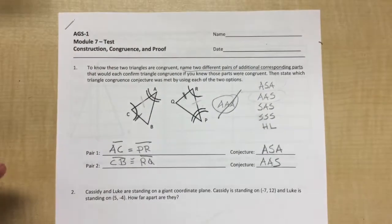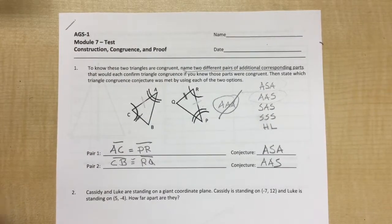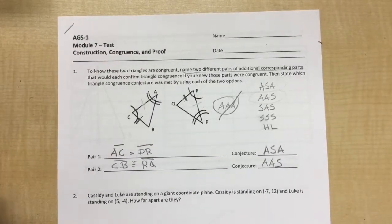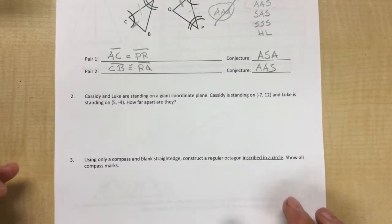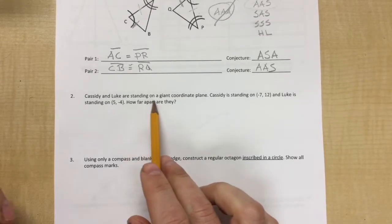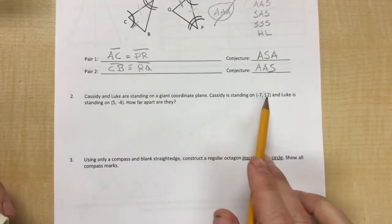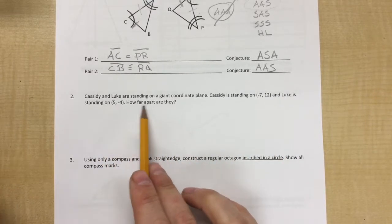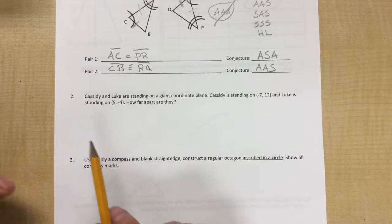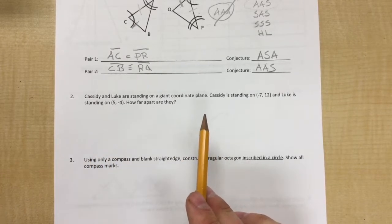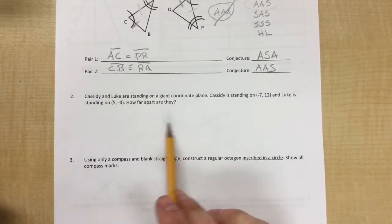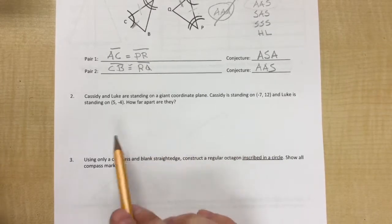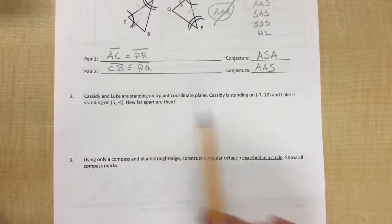Okay cool, let's go on to problem number two. If you're confused at all about one, stop the video and ask me, okay? I want everybody to be able to get a seven or even an eight on the next time we take this test. Okay, two: Cassidy and Luke are standing on a giant coordinate plane. Cassidy is at negative seven twelve and Luke is at five negative four. How far apart are they? We did okay here since it was on the last test and in chapter eight, the whole first lesson 8.1 was about finding the distance between two points.